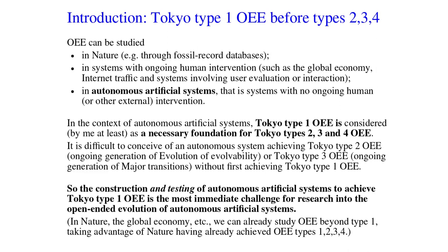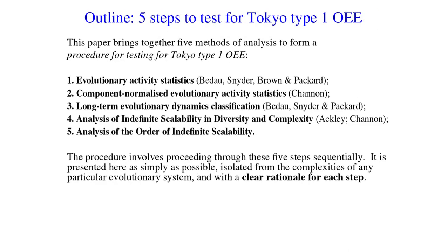In other kinds of systems — nature, the global economy, and so on — we can already study Open Ended Evolution beyond Type 1, by taking advantage of nature having already achieved Types 1, 2, 3, and 4. So, having established the importance of testing for Tokyo Type 1 Open Ended Evolution, how can we do it? In my paper, I've brought together five methods of analysis to form a procedure for testing for Tokyo Type 1 OEE.